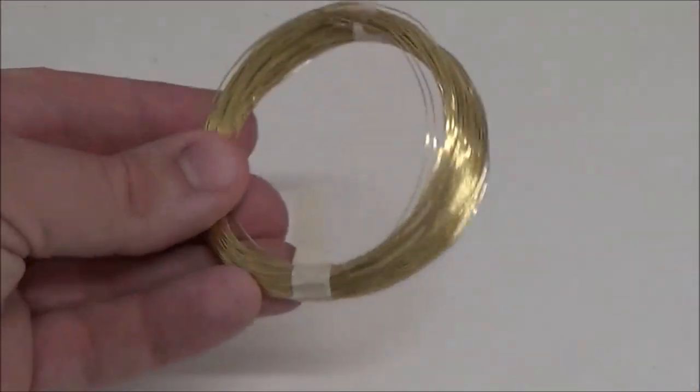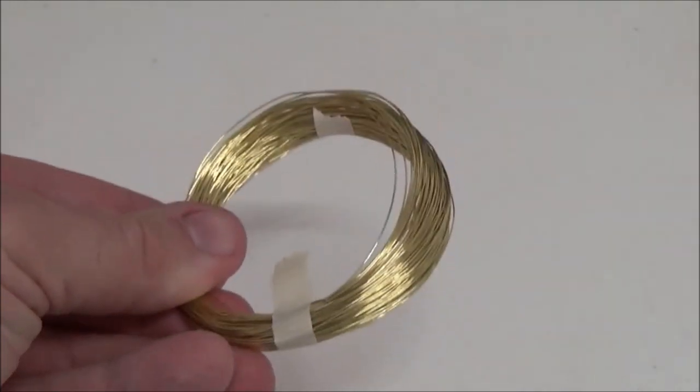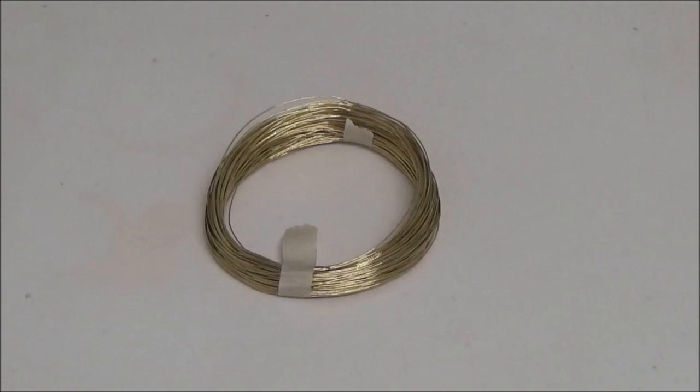We got some brass craft wire for a closer look. Brass is a gold colored alloy of two main metals, copper and zinc. In the following we will determine the copper content.